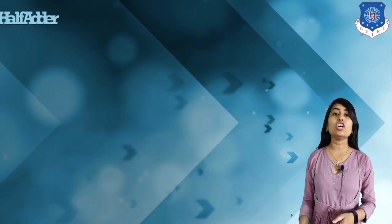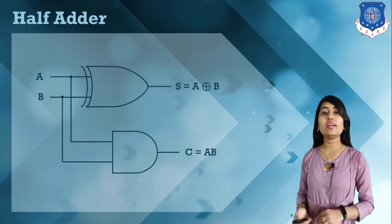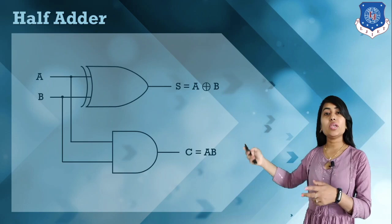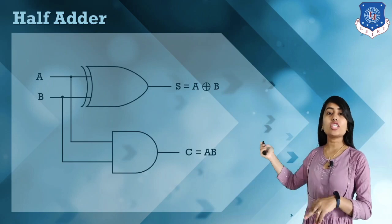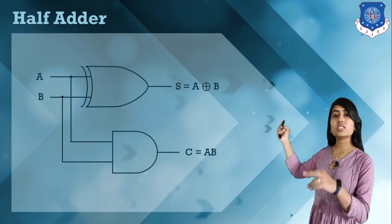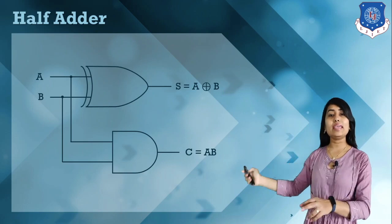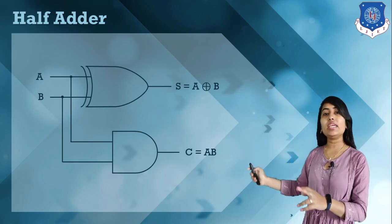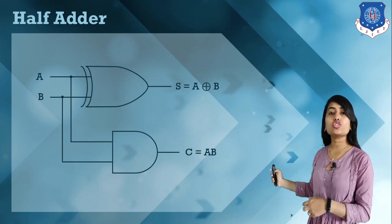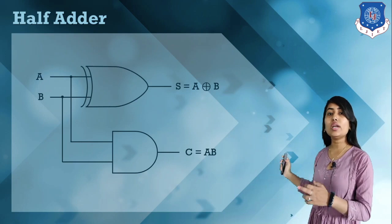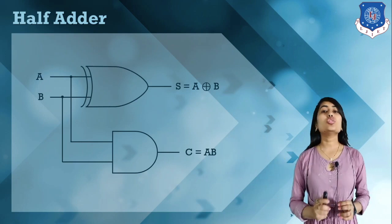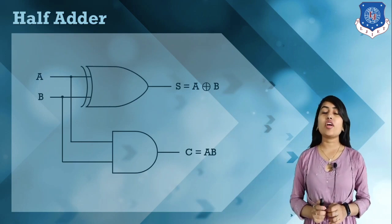So here we have the logical diagram of the half adder: A XOR B gives us the sum, and A AND B gives us the carry. This is the half adder.